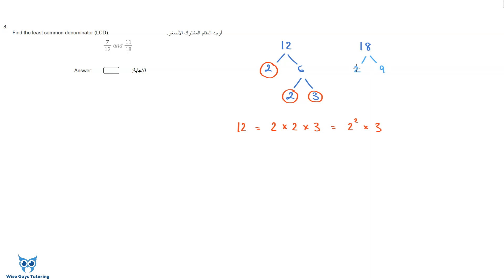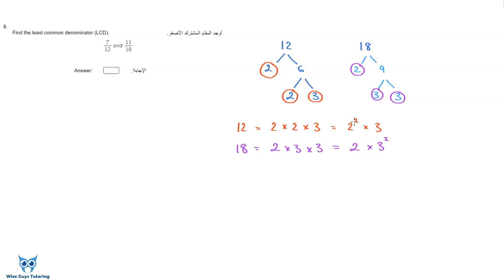For 18: split into 2 and 9, then 9 into 3 and 3 — all primes. So 18 equals 2 times 3 times 3, written as 2 times 3 squared. To find the lowest common multiple, take the highest power of each prime available. The highest power of twos is 2 squared, and the highest power of threes is 3 squared. So the LCM is 4 times 9, which equals 36.